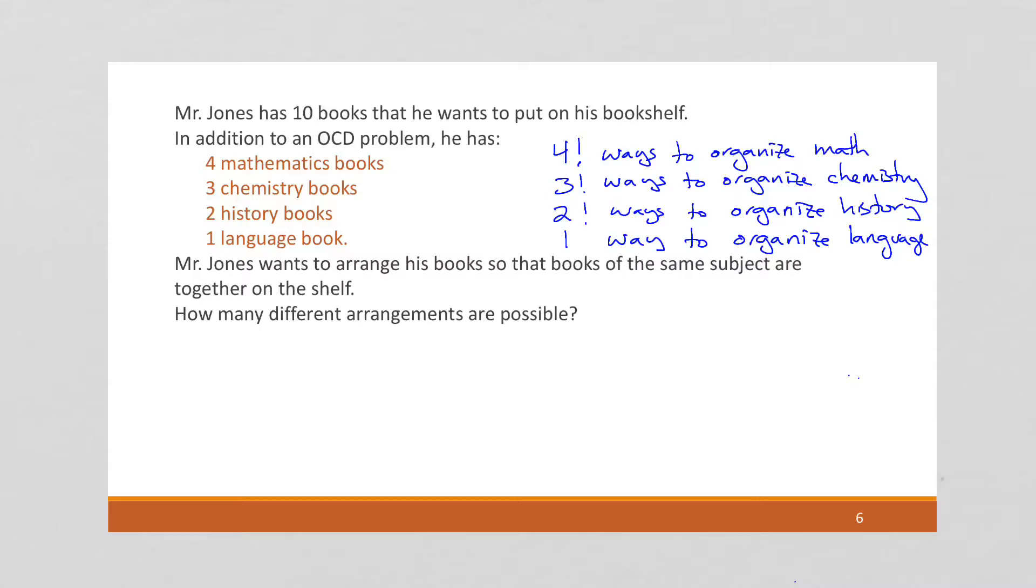Because we also have 4! ways of organizing the categories. That is, do we want the mathematics books first and then chemistry? Or maybe we want chemistry books first and then mathematics. So this is a little interesting. It's a little tricky. We're going to have 4! times 3!. And again, we're using the multiplication rule here.